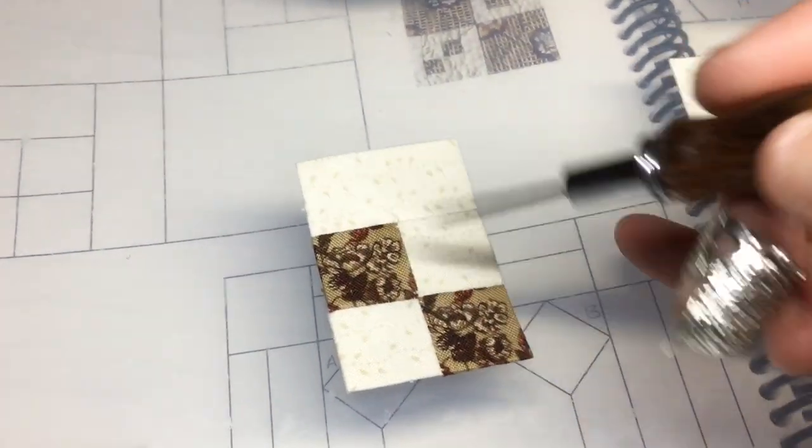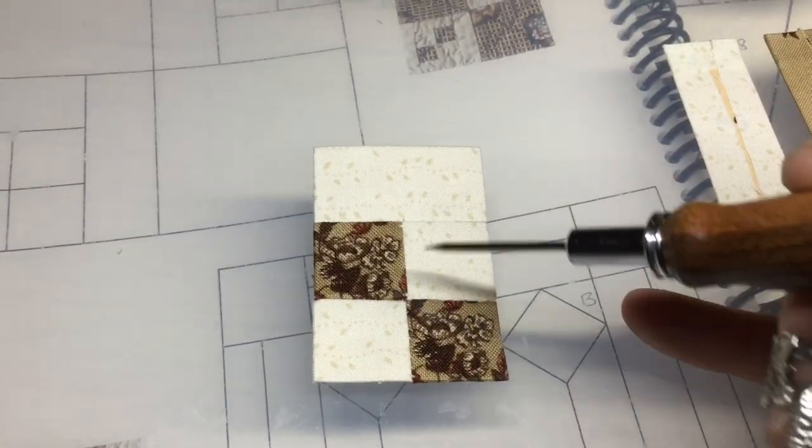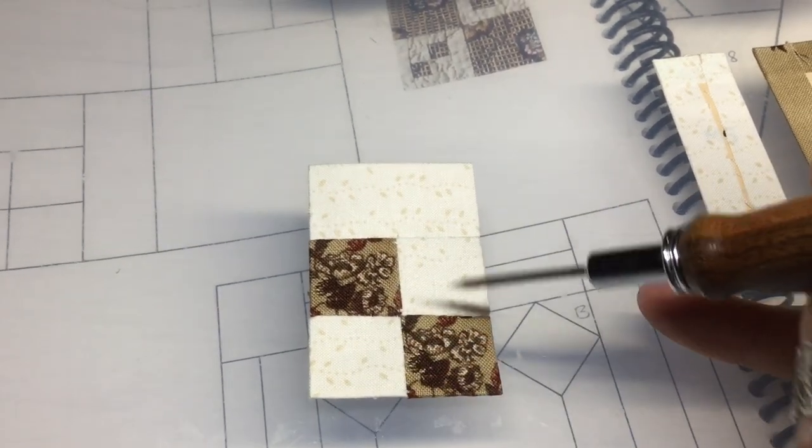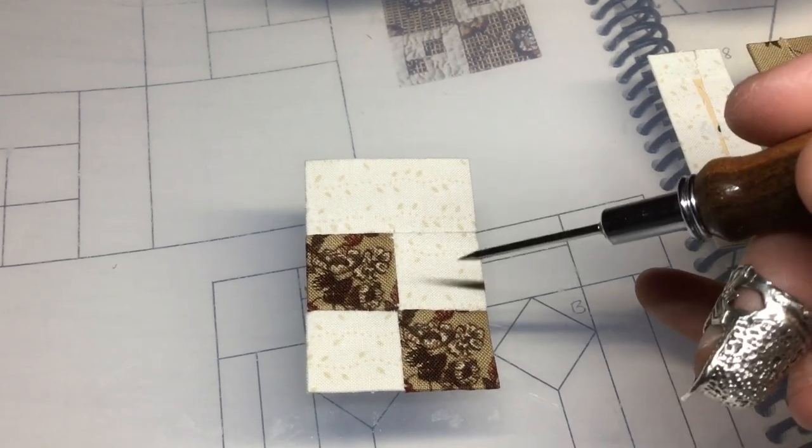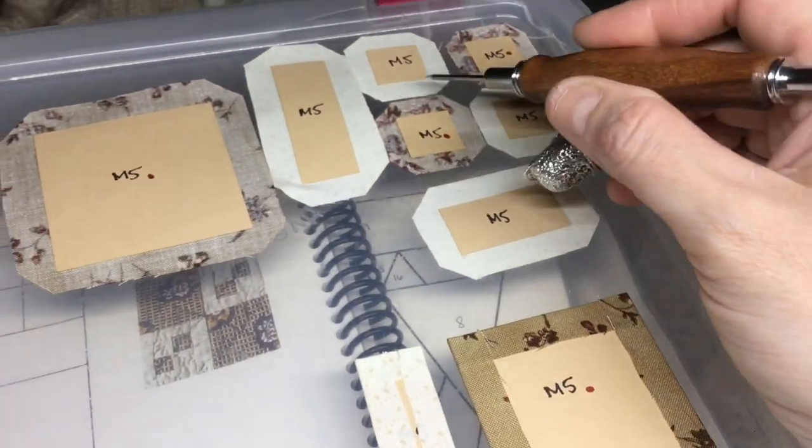So I've connected my rectangle to my four-patch. I've also fixed my directional background that I didn't realize I had when I went to assemble it. So when I'm going to go do these, I'm going to make sure that when I attach them,